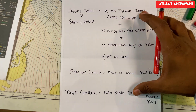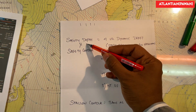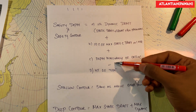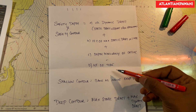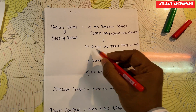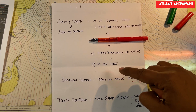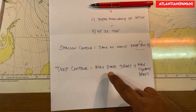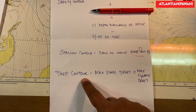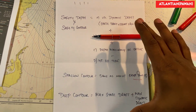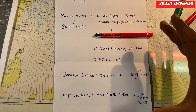To calculate these values — this is the formula as per my company; your company might have a different calculation. Safety depth and safety contour calculation is based on four things. Shallow contour is also calculated based on the same things except for one point. Deep contour, as per my company, is calculated from maximum static draft plus maximum dynamic draft.